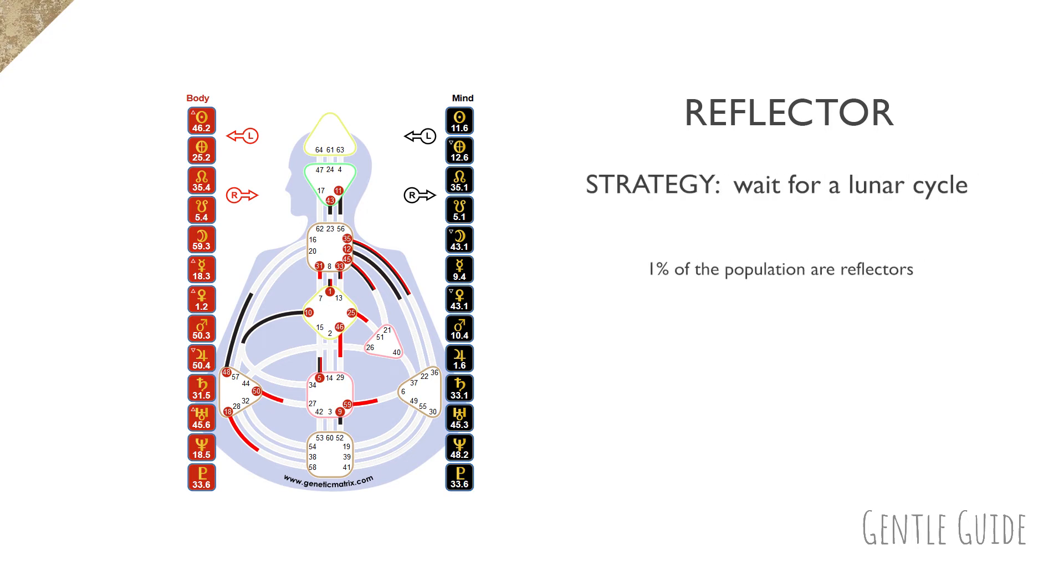So reflectors are a special bunch. There is just 1% of reflector population. Their strategy is to wait for a lunar cycle to turn so they can experience all the energy transits in their system. The way you recognize their chart is that it has no defined centers. Everything is white, which makes them incredibly wise and surprisingly, not as conditioned as other types with open centers. Because their aura protects them from being so.